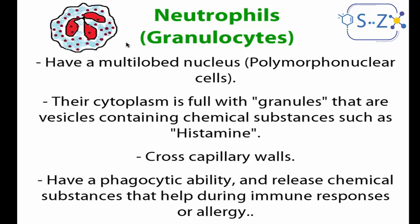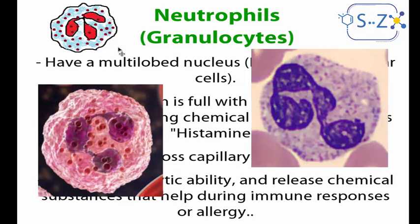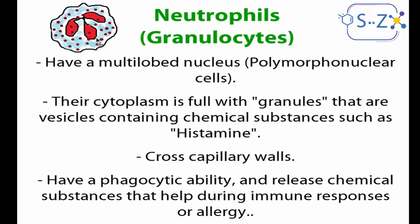The other type of leukocytes are the granulocytes, also called neutrophils. They have a multi-lobed nucleus, which is why they are called polymorphonuclear cells — the nucleus looks like more than one but is actually one lobed nucleus. Their cytoplasm is full of small granules containing chemical substances such as histamine; these granules break and release substances when needed. Granulocytes can also cross capillary walls and have phagocytic ability, and in addition they can secrete certain chemical substances during the immune response.